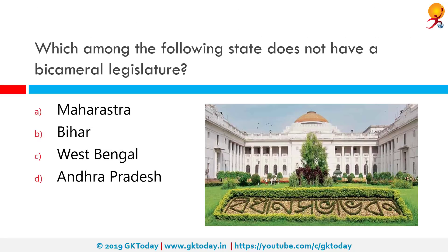Which among the following states does not have a bicameral legislature? Among the given options, West Bengal does not have a bicameral legislature. The seven states that do have a bicameral legislature are Bihar, Maharashtra, Uttar Pradesh, Jammu and Kashmir, Karnataka, Andhra Pradesh and Telangana.